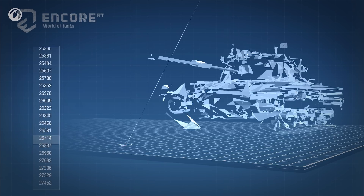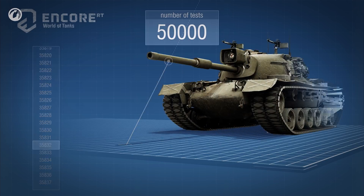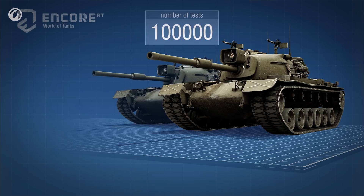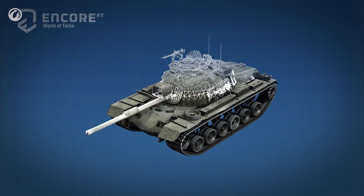The problem is that a vehicle in our game consists of 50,000 polygons on average, so such calculations would take too much time, especially when there are several tanks nearby. To speed up ray tracing, a special BVH structure — bounding volume hierarchies — is used. It's a hierarchical structure of geometrical objects. It distributes the triangles into specific boxes and saves on the number of intersection checks.